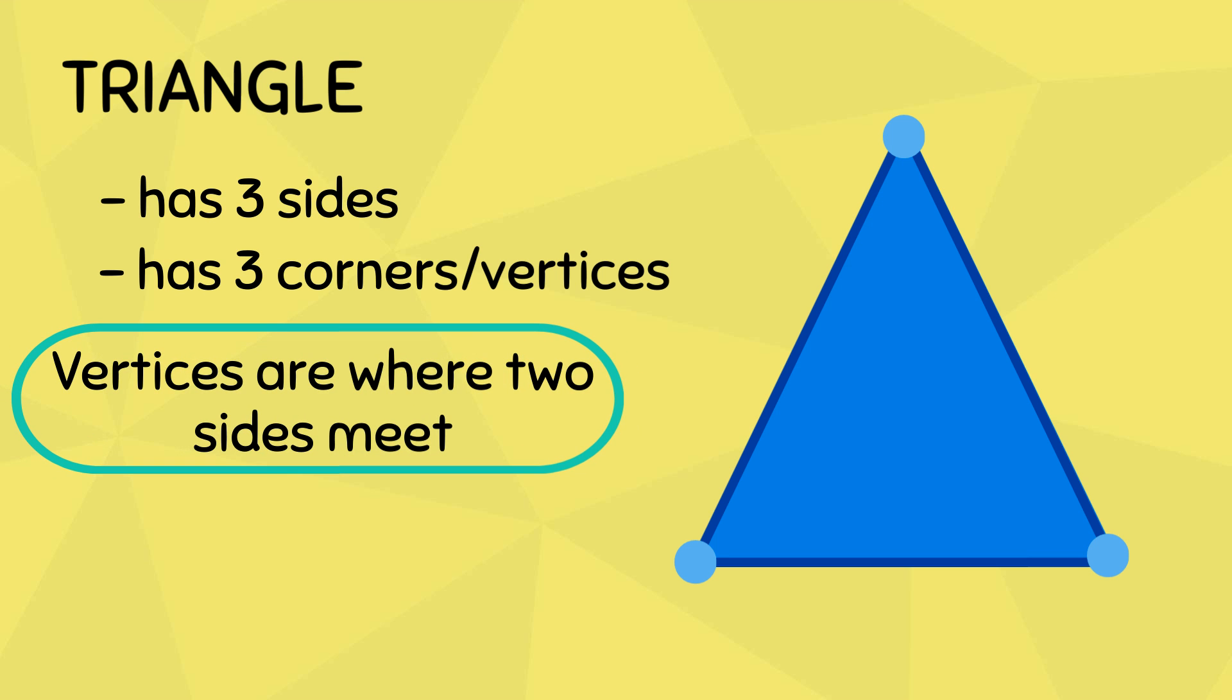two sides meet. By the way, a single corner is called a vertex. Pizza slices and recycling symbols are shaped like triangles.